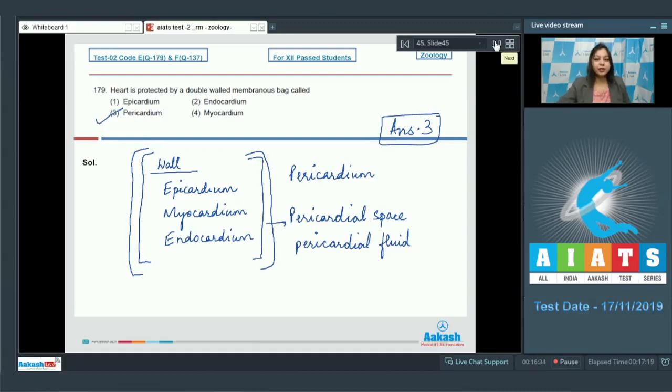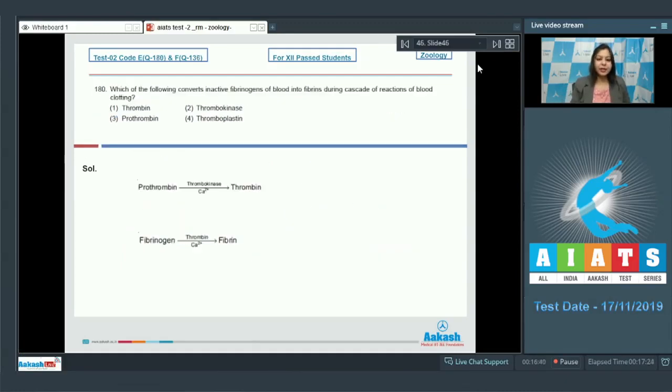Question number 180: Which of the following converts inactive fibrinogens of blood into fibrins during cascade of reactions of blood clotting? Option number one: thrombin. Option number two: thrombokinase. Option number three: prothrombin. And option number four is thromboplastin. Here we have two reactions which occur during the cascade of blood clotting.